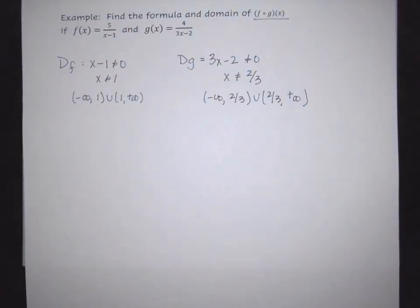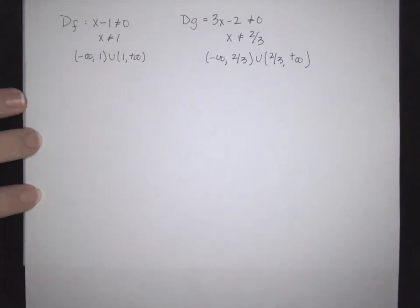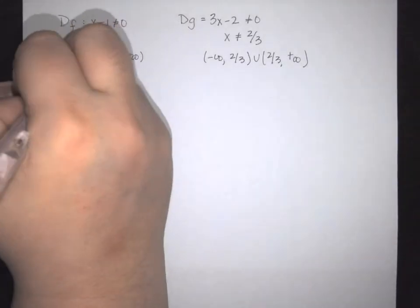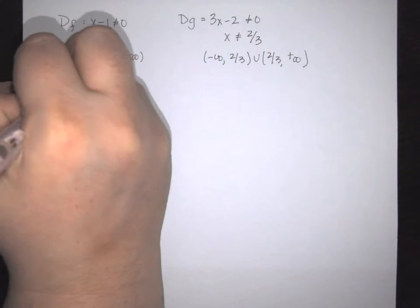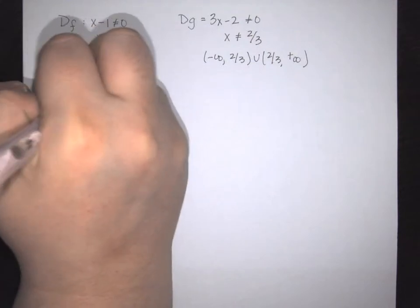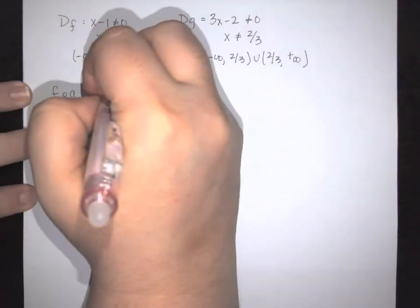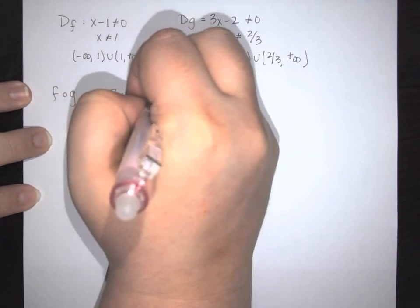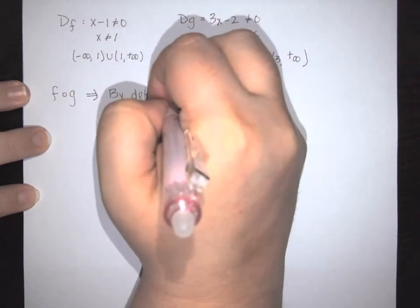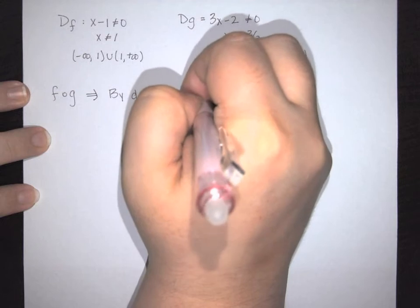Now that we know the two domains, we can work on finding the composition. So we're going to look at f of g, and what that essentially says is that by definition we are looking for f of g of x.